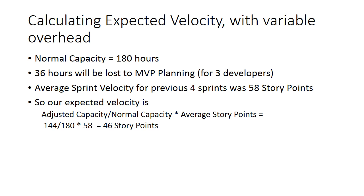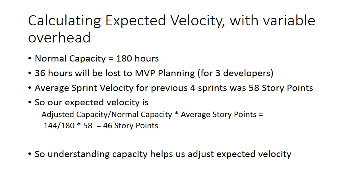So the team should pull in about 46 story points for this sprint. Understanding capacity and using a bit of arithmetic, the team can adjust their velocity to determine how much work to pull into the next sprint.